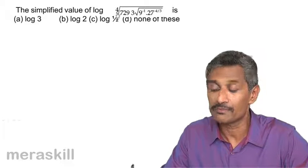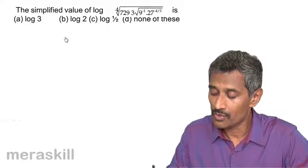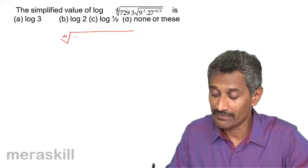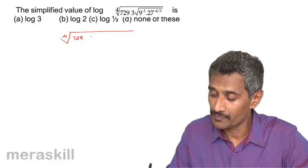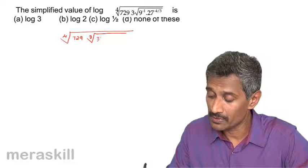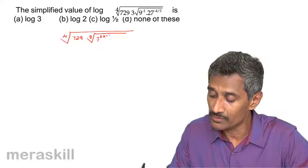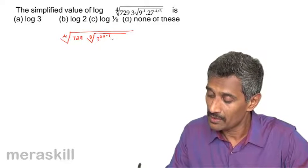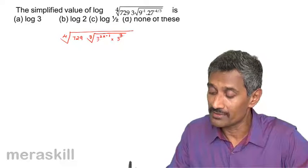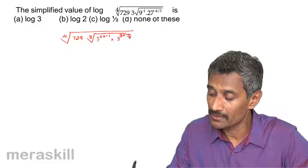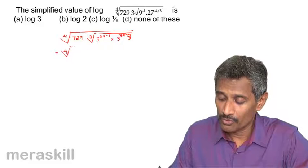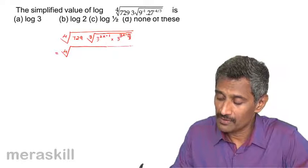Let's simplify this further. The fourth root of 729, the cube root of 9 raised to minus 1 can be written as 3 squared raised to minus 1, that is 3 to the power of minus 2. And 27 is 3 cubed, so 27 raised to minus 4 by 3 is 3 cubed raised to minus 4 by 3.